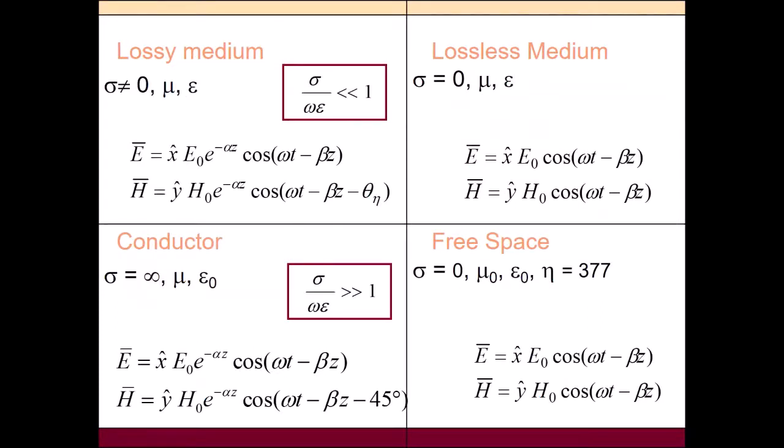So as a conclusion, we have four different types of media that we discussed. Firstly, the lossy medium. For the lossy medium, sigma is not equal to zero, has certain value. And sigma divided by omega epsilon is much less than 1. And it has a phase difference of theta_n. The H lagging E. The rest is almost the same. The propagation direction same. The E and H always perpendicular.